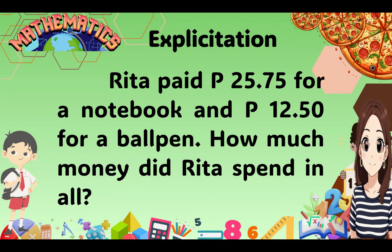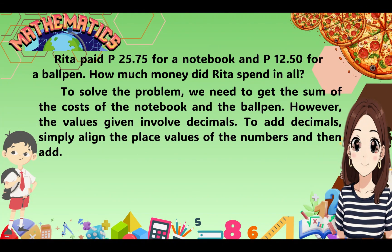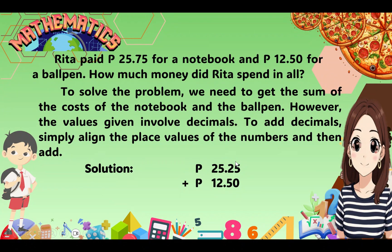Now let's read the problem. Rita paid 25 pesos and 75 cents for a notebook and 12 pesos and 50 cents for a ball pen. How much money did Rita spend in all? To solve the problem, we need to get the sum of the costs of the notebook and the ball pen. The values given involve decimals. To add decimals, simply align the place values of the numbers and then add. So we have 25.75 plus 12.50. The decimal places should be aligned. 5 plus 0 equals 5, 7 plus 5 equals 12, carry the 1; the answer is 37 pesos and 75 cents.